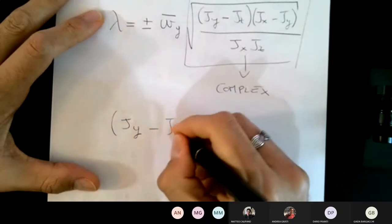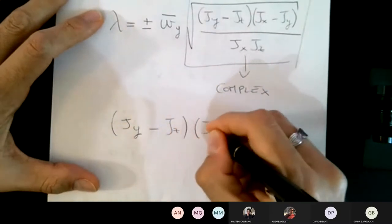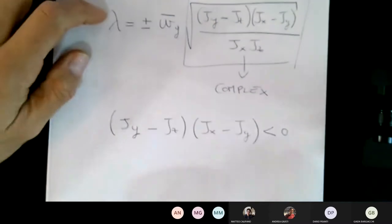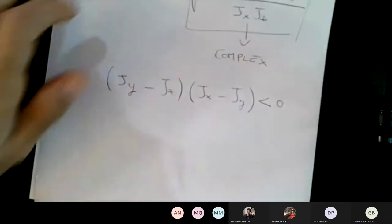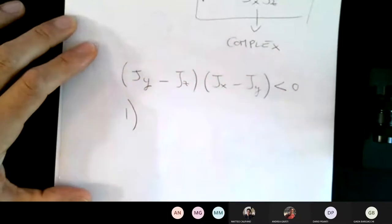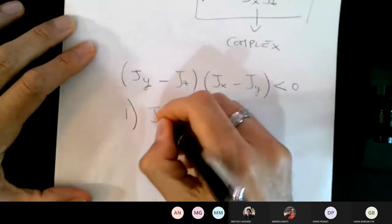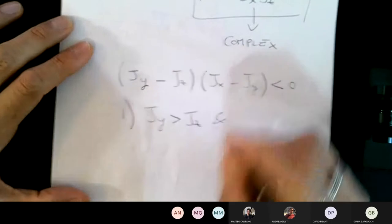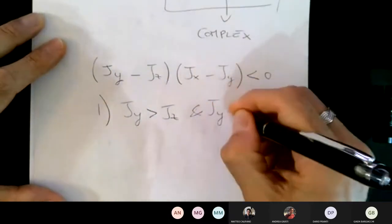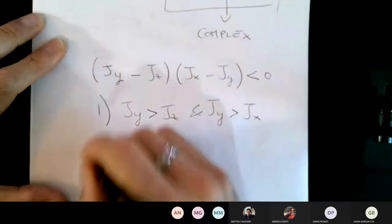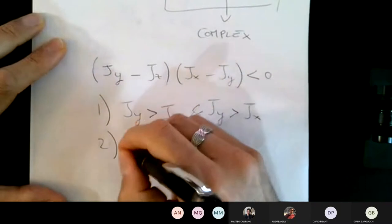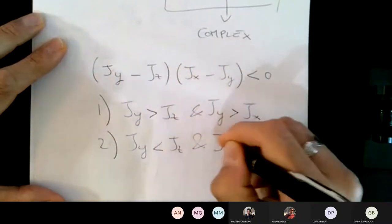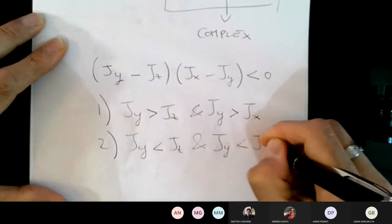So whatever is in here has to be negative, and that means that (J_y minus J_z) times (J_x minus J_y) has to be negative. So you have two cases. Case one: J_y is greater than J_z and at the same time J_y is greater than J_x. Case two: J_y is less than J_z and it's also less than J_x.